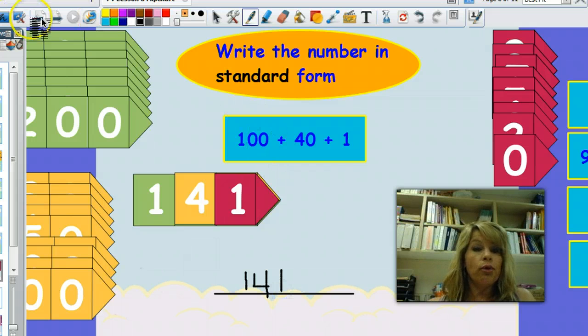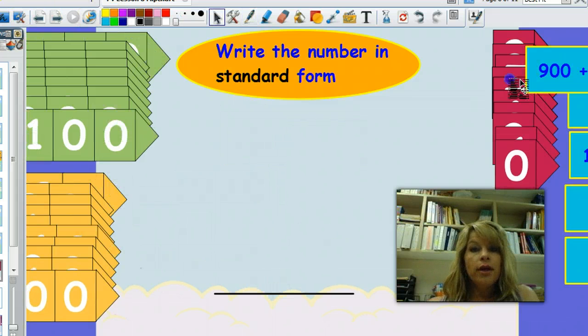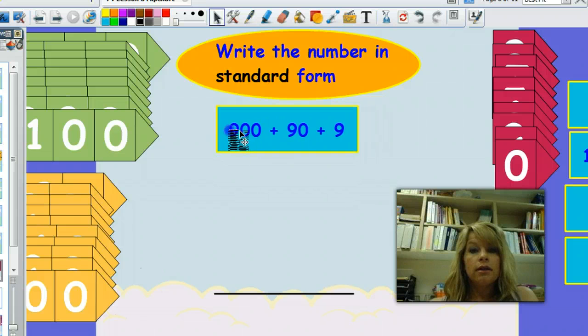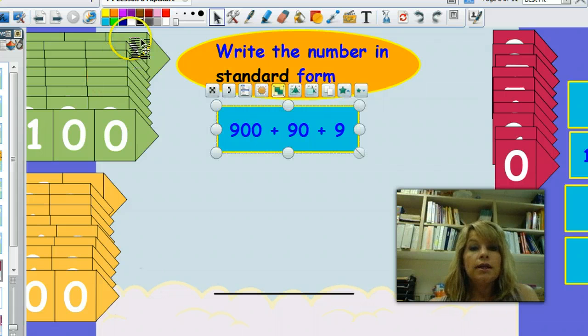I want you to try one more. I want you to get your arrow cards and build this number. You'll need your arrow card 900, your arrow card that represents 90, and your arrow card that represents 9. After you build the number, I want you to write it in standard form on your whiteboard. Press pause to work. Press play when you're ready to check.